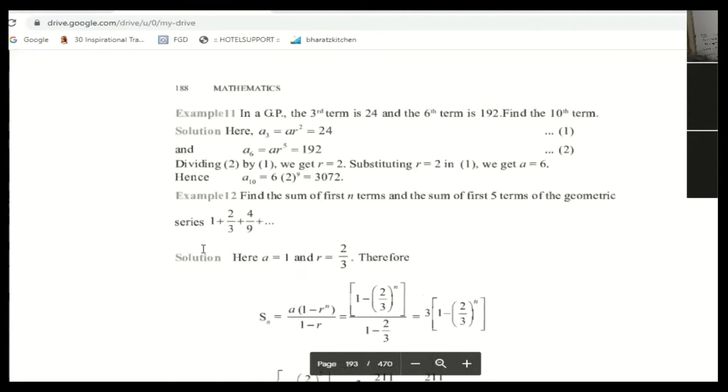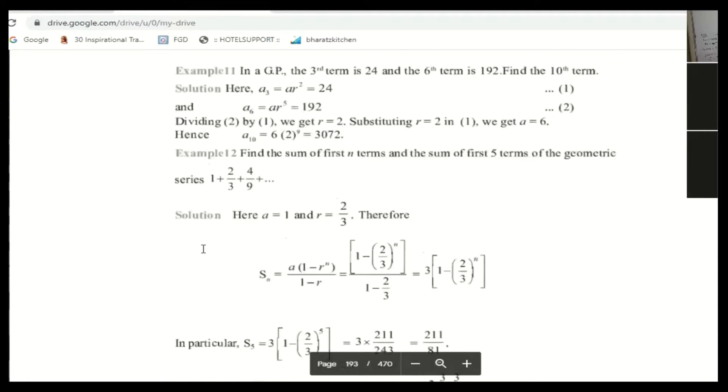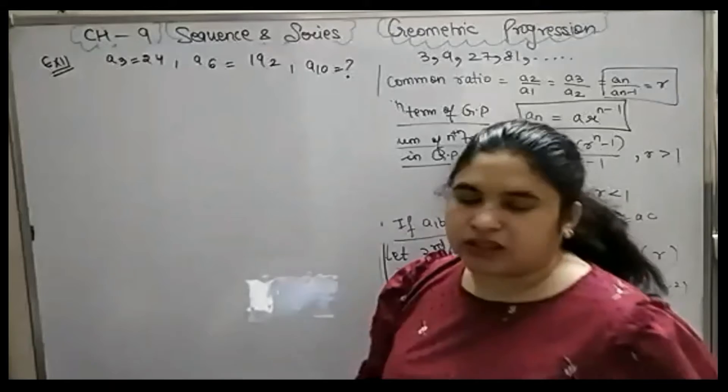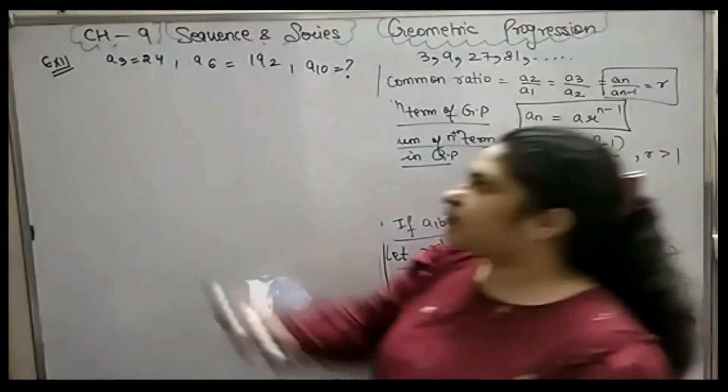With example number 11, in a GP, the third term is 24 and the sixth term is 192. Someone gave two terms in a GP: the third term is 24 and the sixth term is 192, and you have to find the 10th term. Now tell me, what does the third term mean?